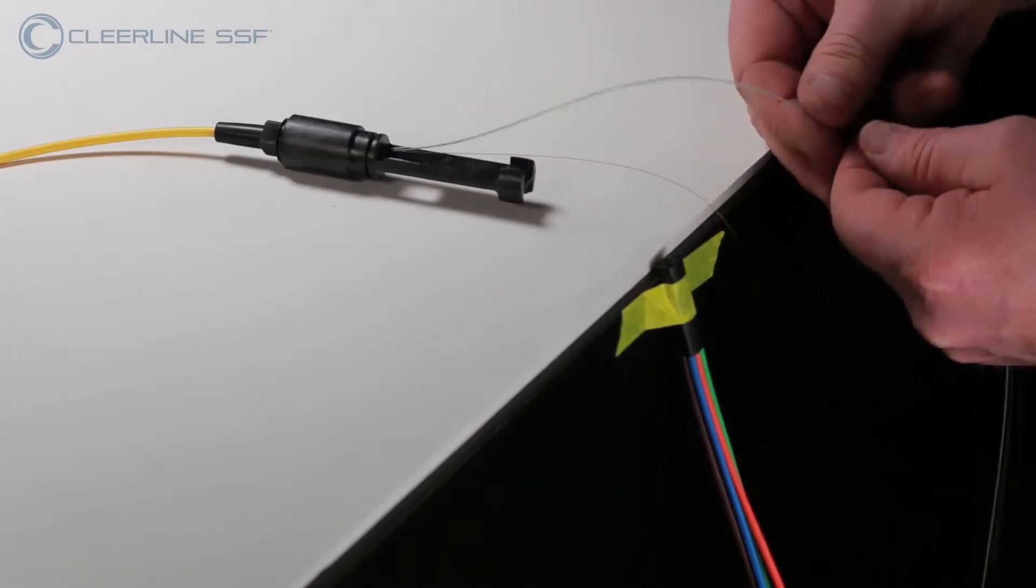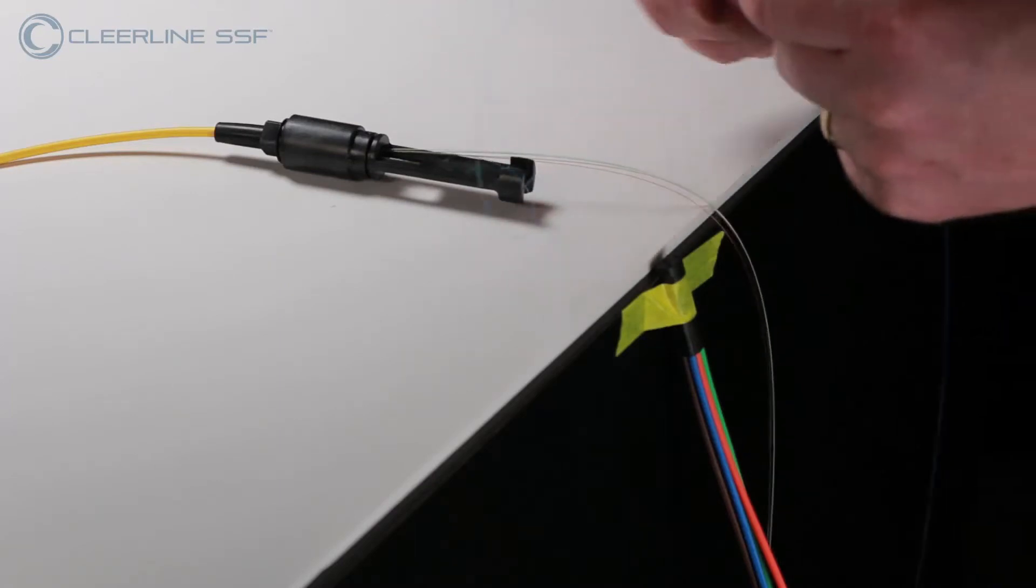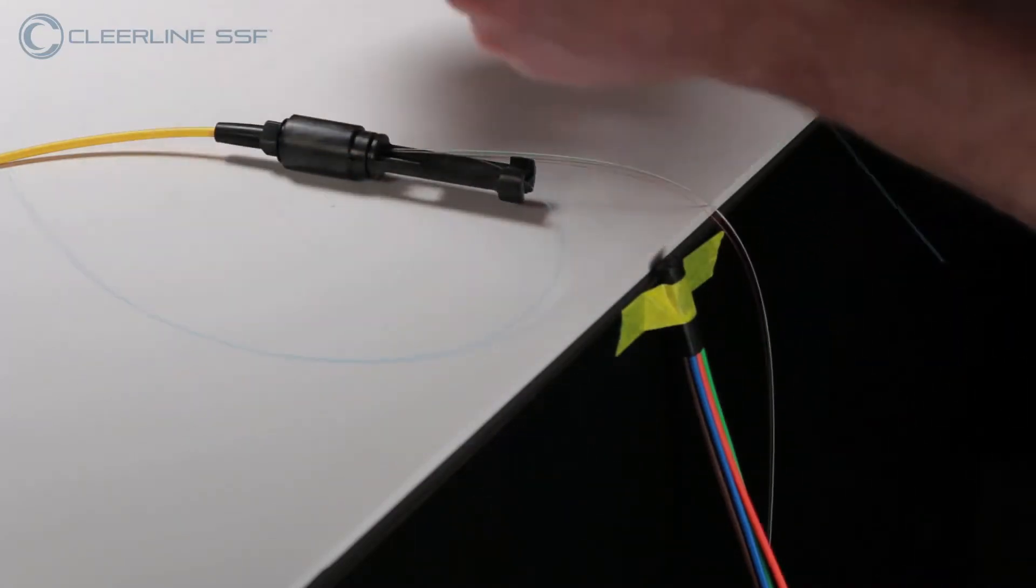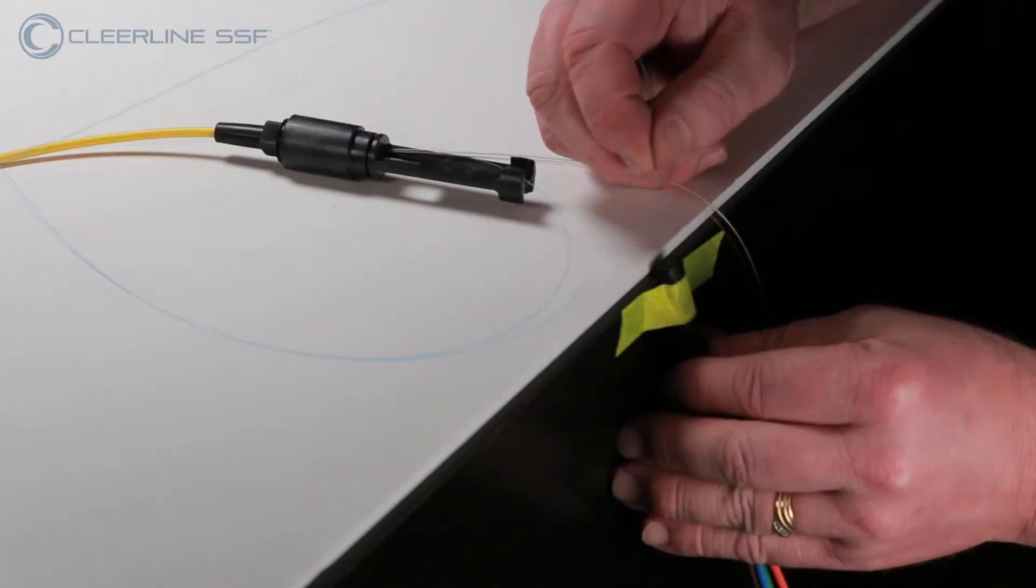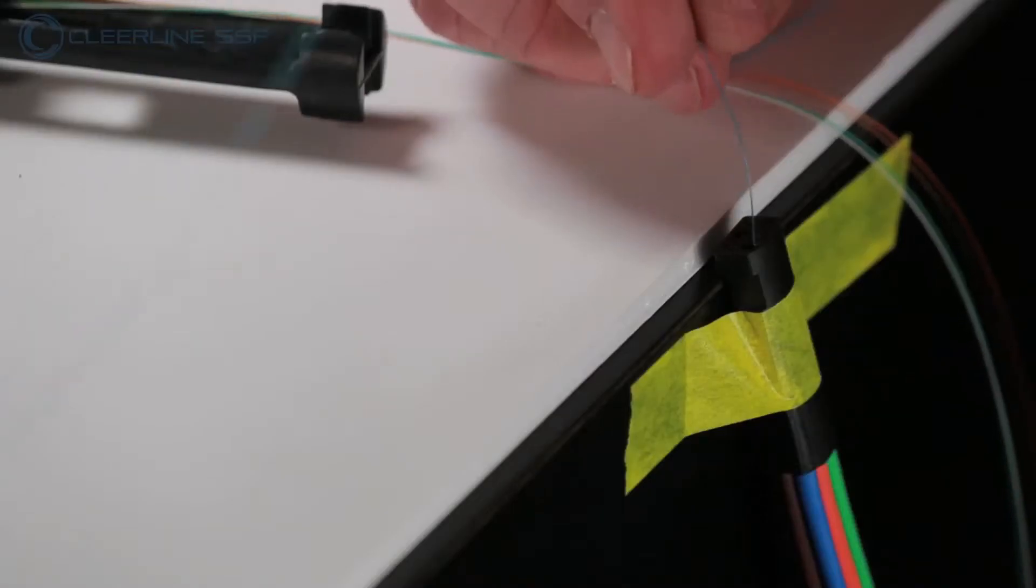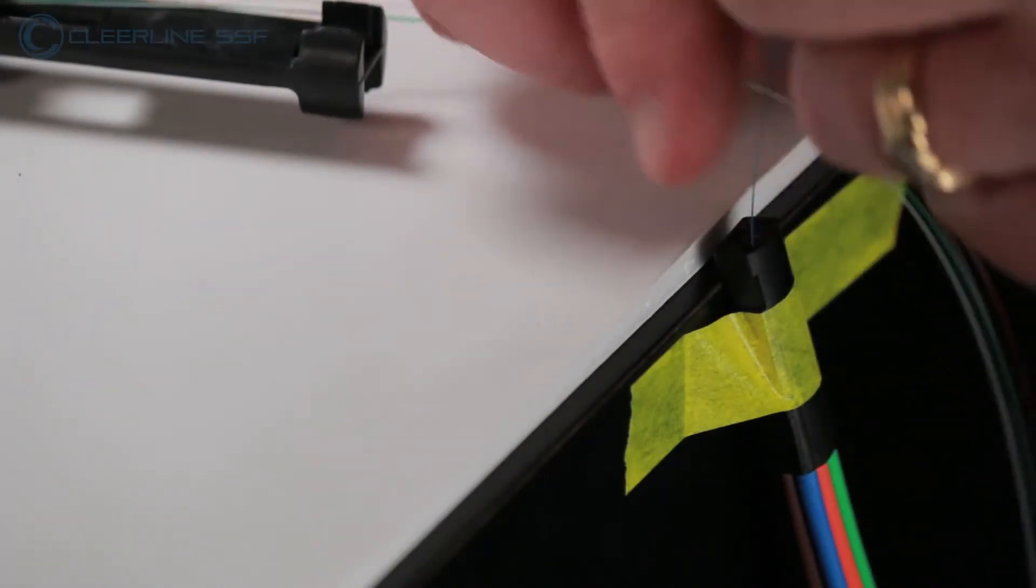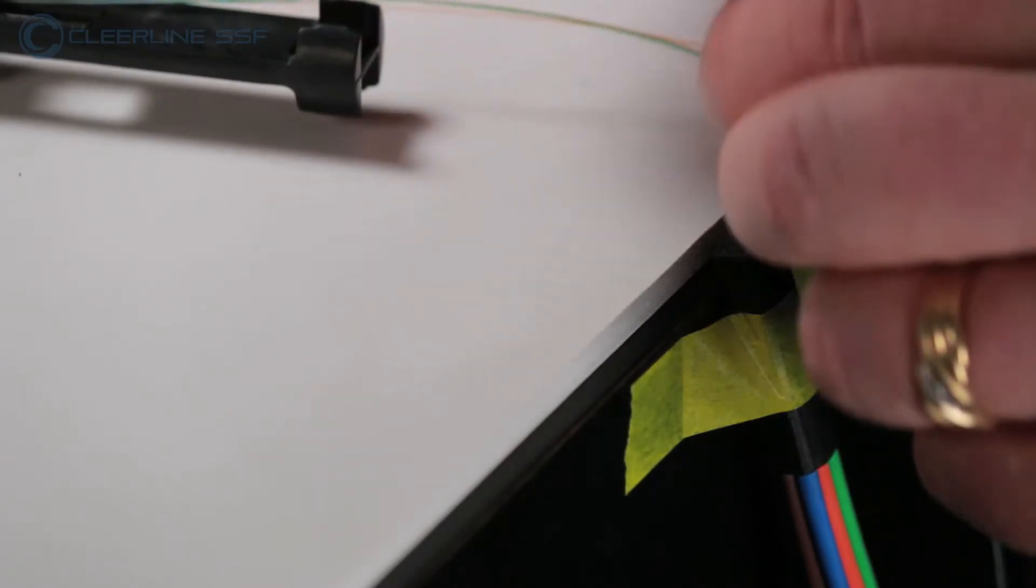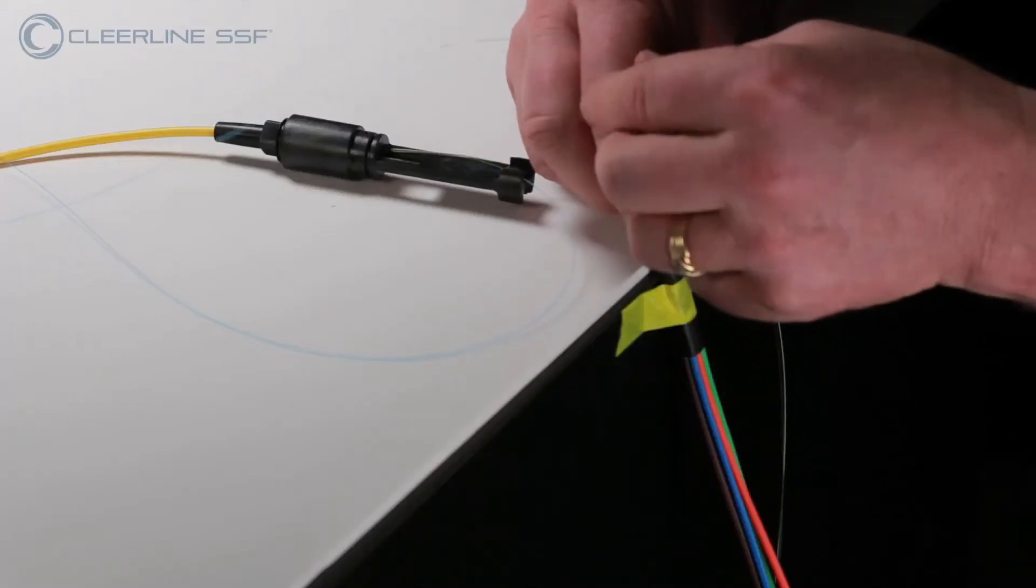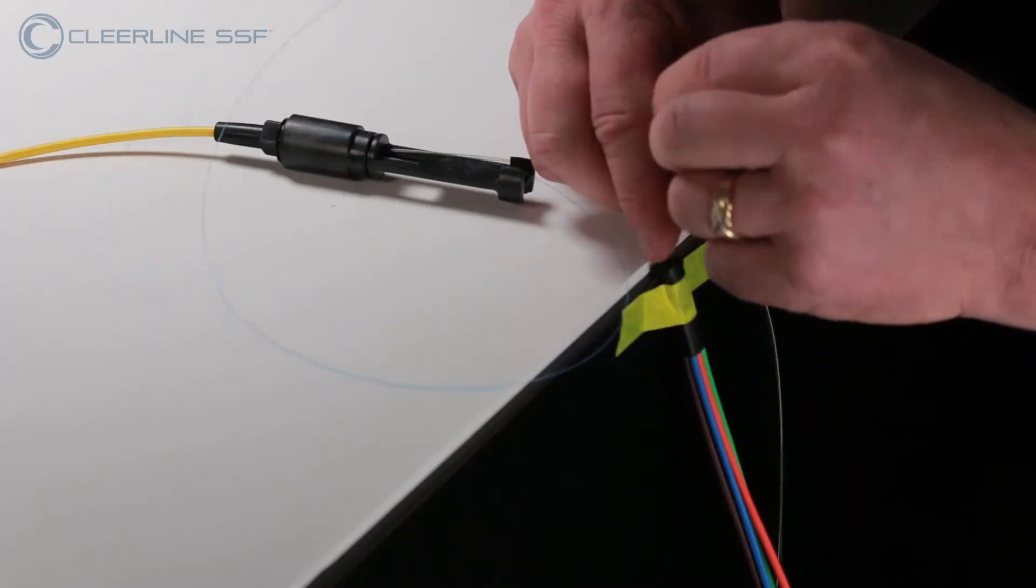Untangle the fibers so that each can be separated back to the point where they exit the housing. Insert the first fiber through the matching colored forkation tube in the block until the fiber exits the far end of the tubing towards the floor. Ensure the fibers are not twisted around each other as they enter the block as this may cause micro bends and result in attenuation loss. Repeat this process for each of the remaining fibers.